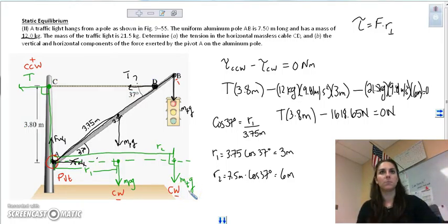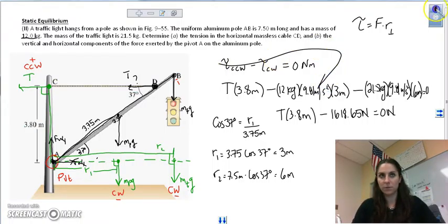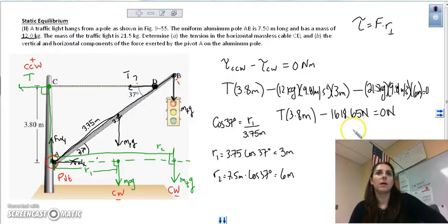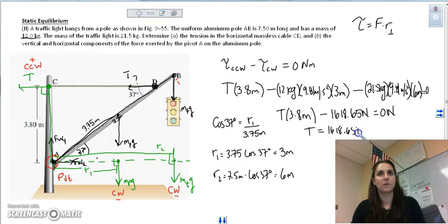I'm continuing from the previous recording. I calculated these two numbers to get this result. Now I can solve for T by adding this over and dividing by 3.81. T is going to be 1618.65 divided by 3.81. Tension is 425.96 newtons and that's the answer.